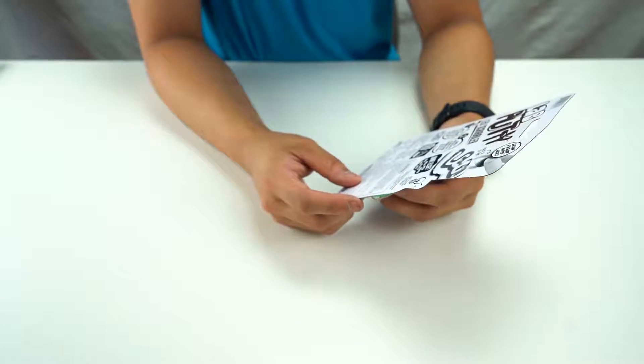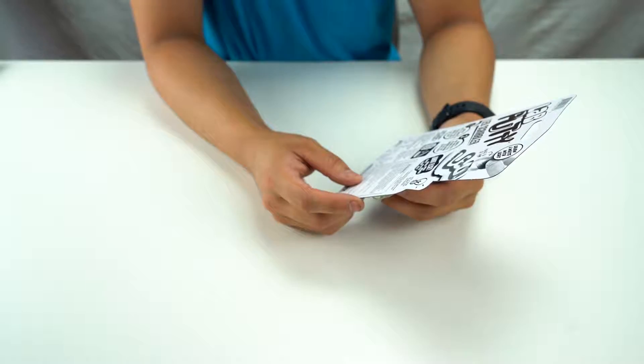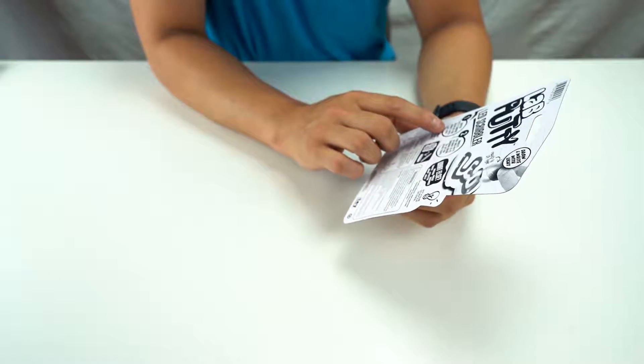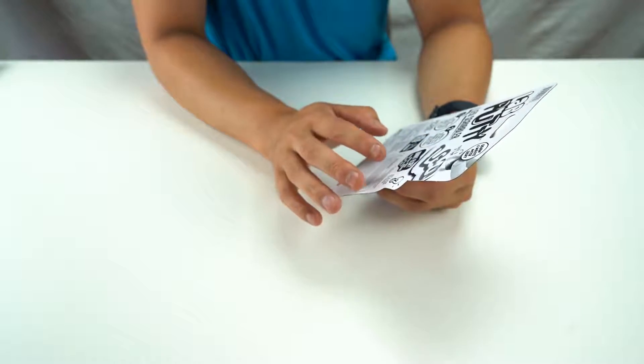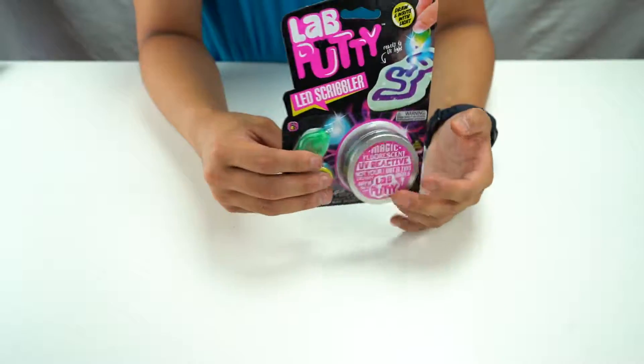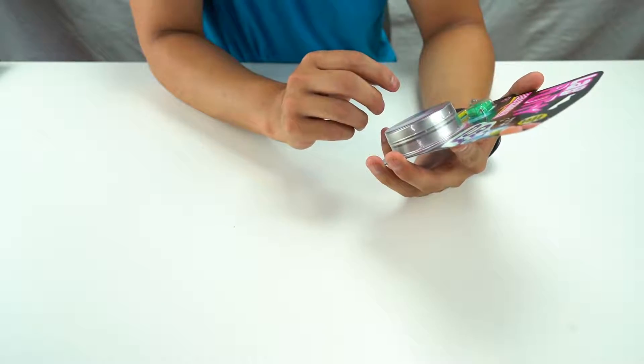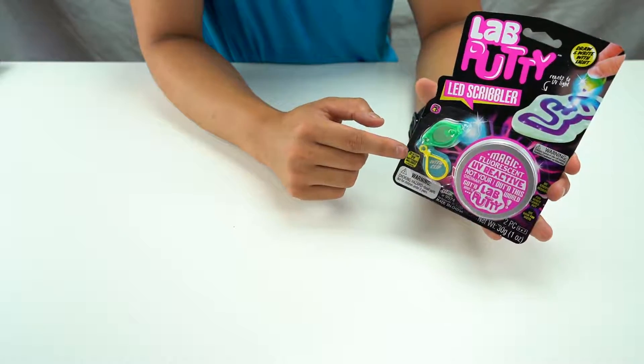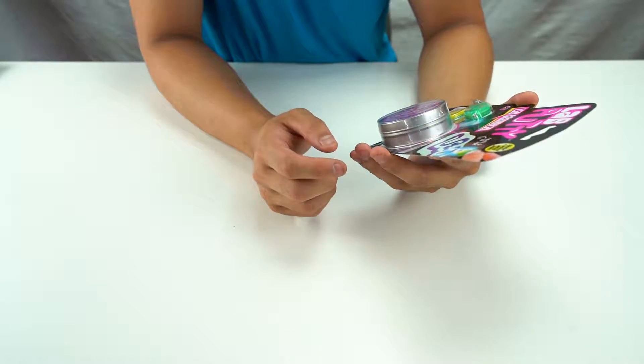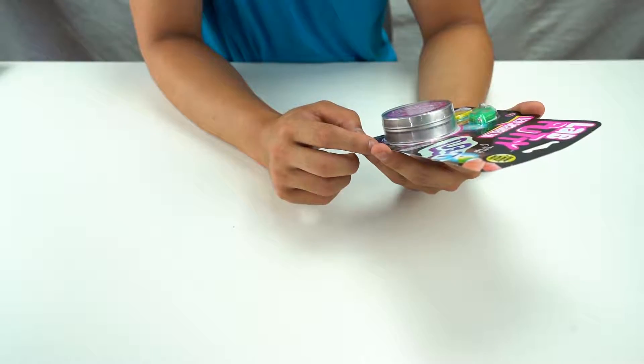Let's read some of this off. Watch putty change color as you doodle. Well, I can't read with UV light. Doodles fade and putty returns to its original color, so the fun never stops. Interesting. All right, let's see. This is meant for ages 4 plus. The batteries are included, which is nice. No sticky residue, fun never dries out.